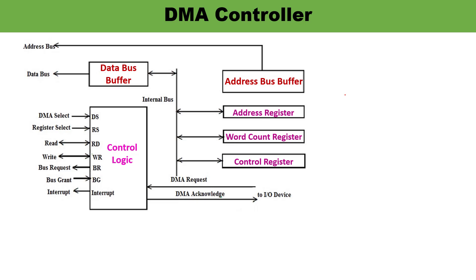Now let us have a look at this diagram of the DMA controller — the Direct Memory Access controller. You can see there is an address bus buffer and a data bus buffer. The address unit is used for generating addresses so that particular IO devices can be selected for the data transfer. The data bus buffer is used to store data whenever there is a requirement to transfer data — the buffer can hold temporary data. It also has control logic, and you can see various lines here.